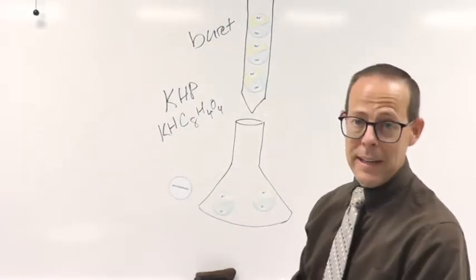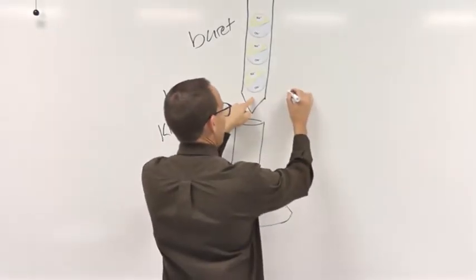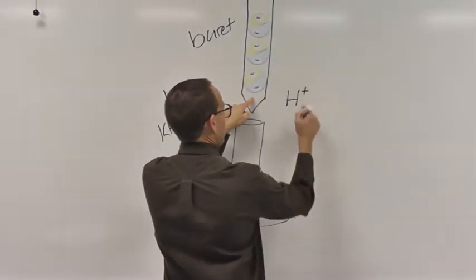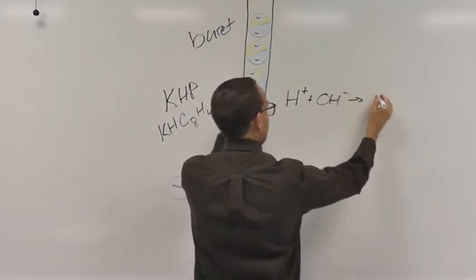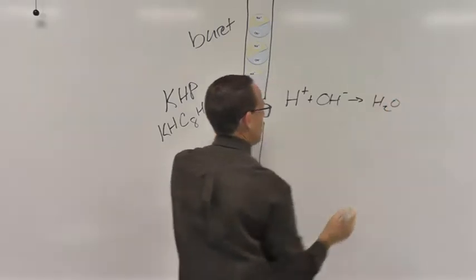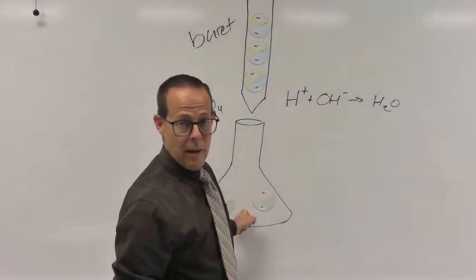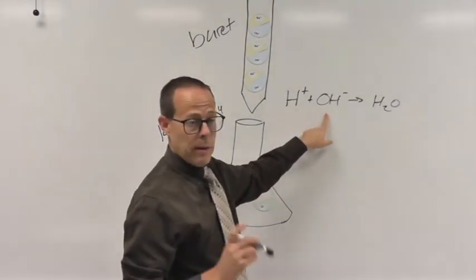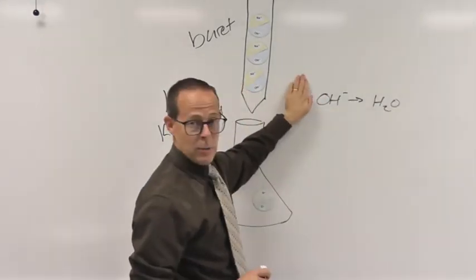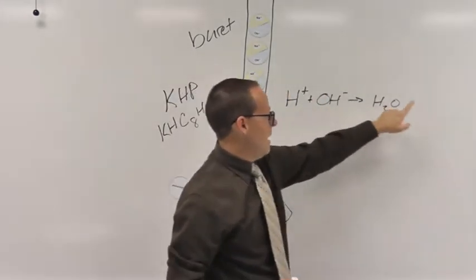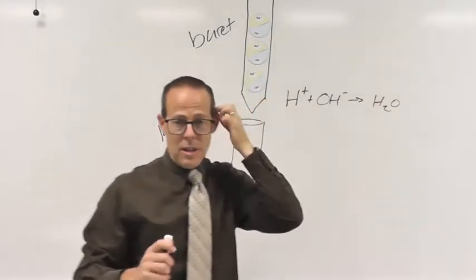Essentially what ends up happening is our sodium hydroxide has one hydroxide. So we have this net ionic equation where we have H plus from my KHP plus hydroxide yields water. As soon as all of my KHP is used up, an additional amount of OH ends up over here because there's no more H plus to react with it. So as soon as we are adding more hydroxide, it shows up on the product side, and it's going to react with something called phenolphthalein.